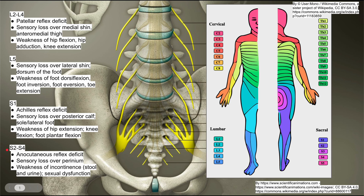The last one is S2 to S4. These are the dermatomes arranged in concentric circles around your bottom. The deficit here makes sense: you'll have an anocutaneous reflex deficit, sensory loss over the perineum — consistent with these dermatomes — and incontinence of both stool and urine. You'll also have sexual dysfunction, again consistent with the S2 to S4 dermatomes.